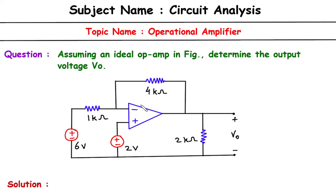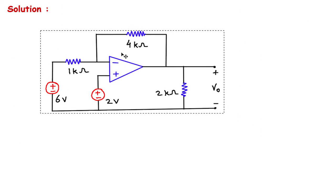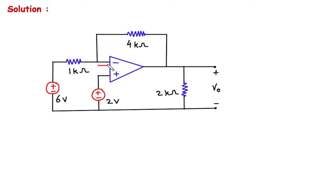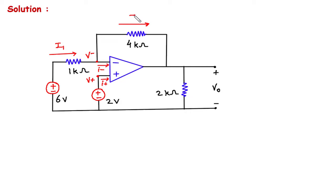Here we have to assume this as an ideal op-amp and determine the output voltage Vo. Let's label this as current I- and this as current I+. This node voltage is V- and this node voltage is V+. Also, let's assume this is current I1, this is current I2, and this is current I3.